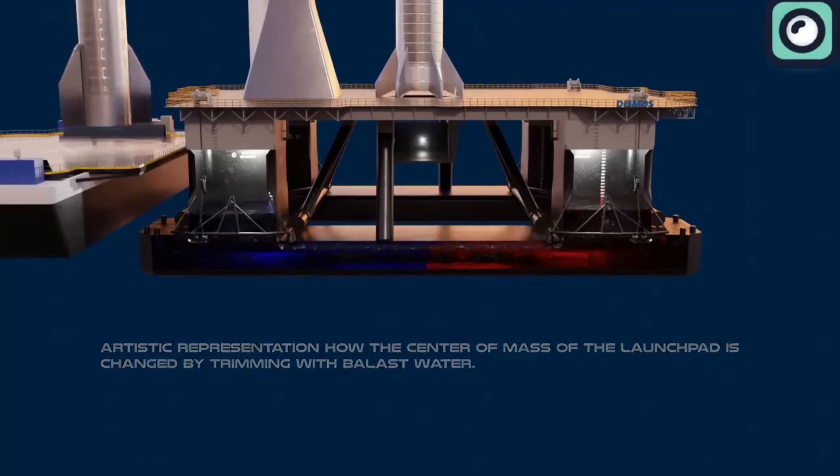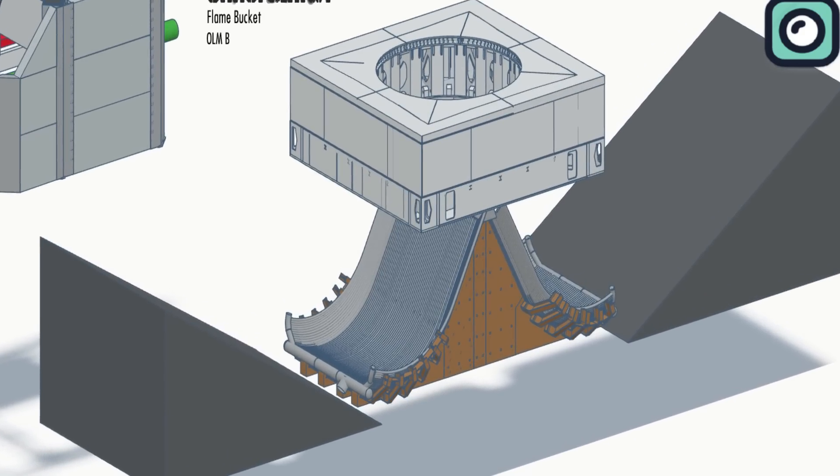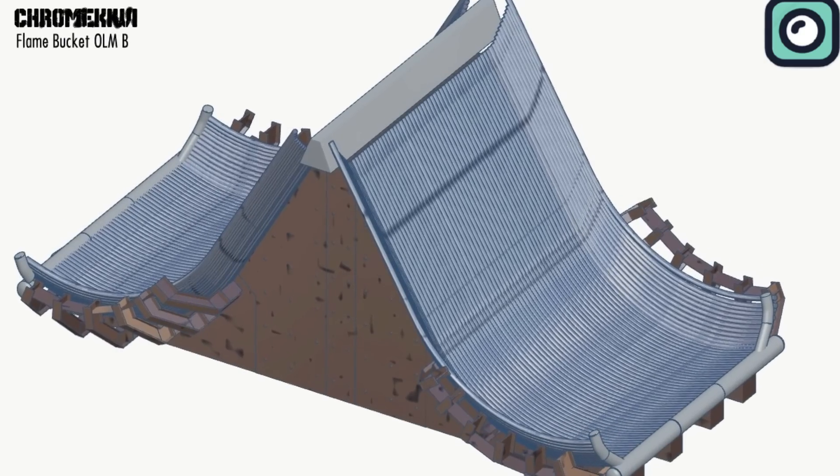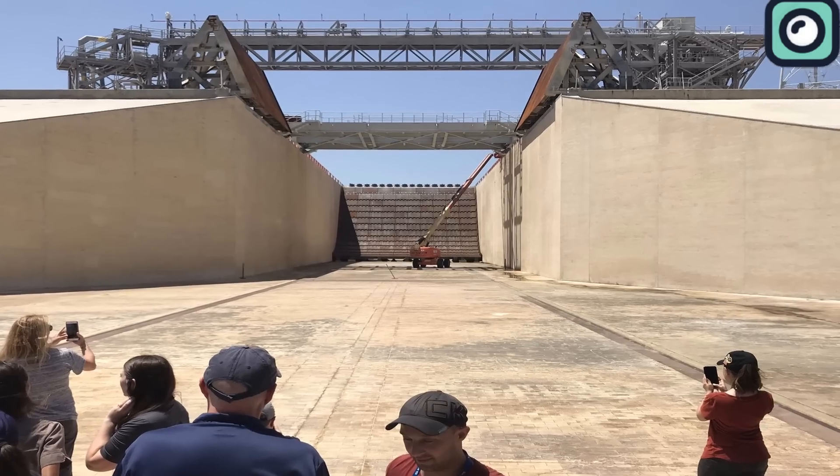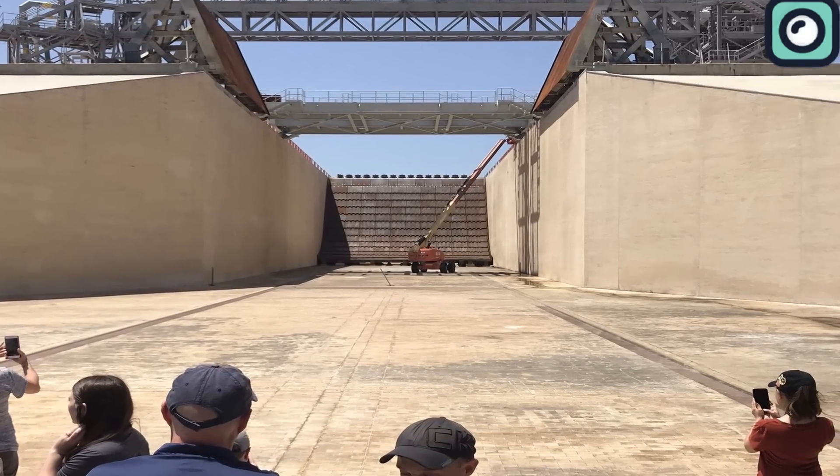One of the main features of this pad is the flame diverter, a device that channels the intense heat and pressure away from the base of the rocket. This approach is inspired by designs like NASA's Apollo-era flame trenches, which successfully protected launch infrastructure by diverting flames into trenches away from the pad.